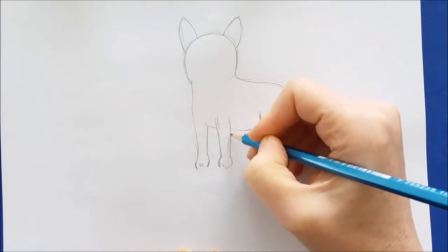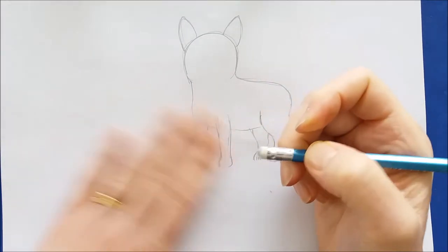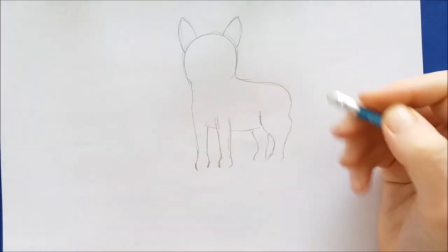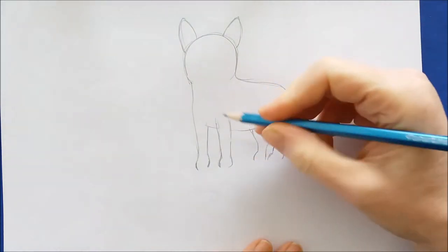You can go over the lines on your dog's legs just like I'm doing here. This will help the legs to stand out a little bit before you get ready to color him.